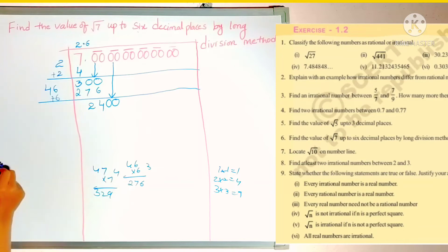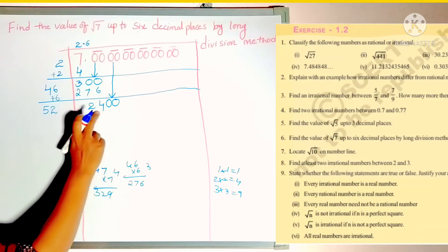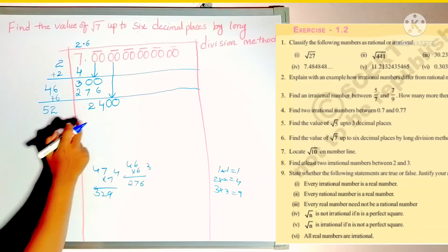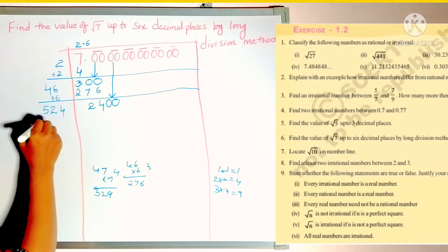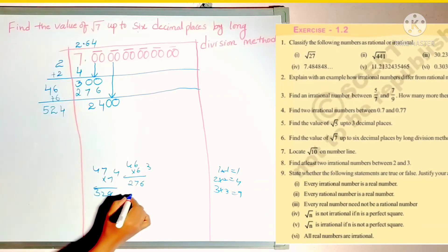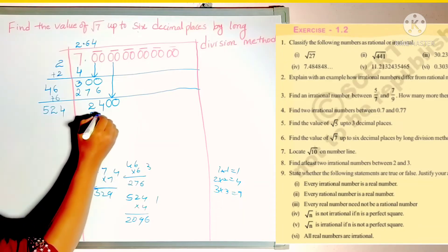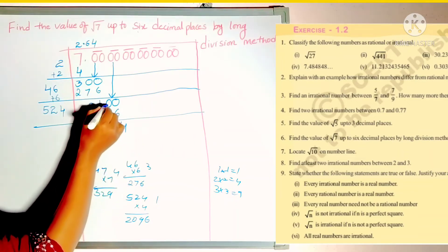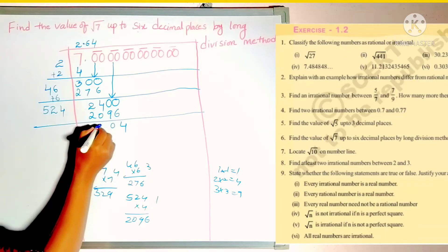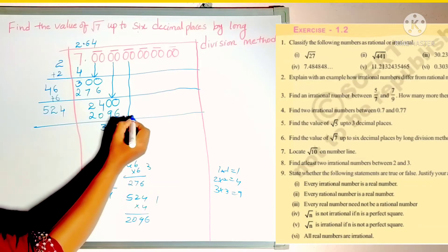So after subtracting, 10 minus 6 is 4, 2. Again we write next set of zeros down. And this 46 what we wrote in the quotient last time, just add that number. 46 plus 6 will become 52. So here 24 is there and here 5. 5 times 4 is 20. So you can check 524 times 4. It is 296. So after subtracting, it is 304.